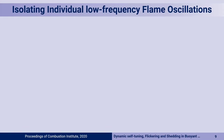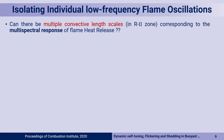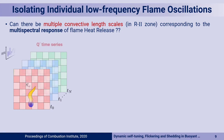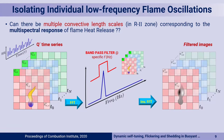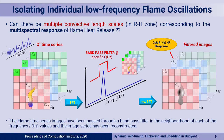Isolating individual low-frequency oscillations is one of the most important things. We conjecture that by looking at the Regime 2 zone of the flame, there must be multiple convective length scales that correspond to this multispectral response of the flame heat release. To understand that, we took a time series of the heat release data, applied a bandpass filter around a frequency of choice F, did an inverse Fourier transform, and reconstructed filtered images corresponding to each particular frequency. This allows us to look at each individual frequency and how it grows in terms of a convective length scale.